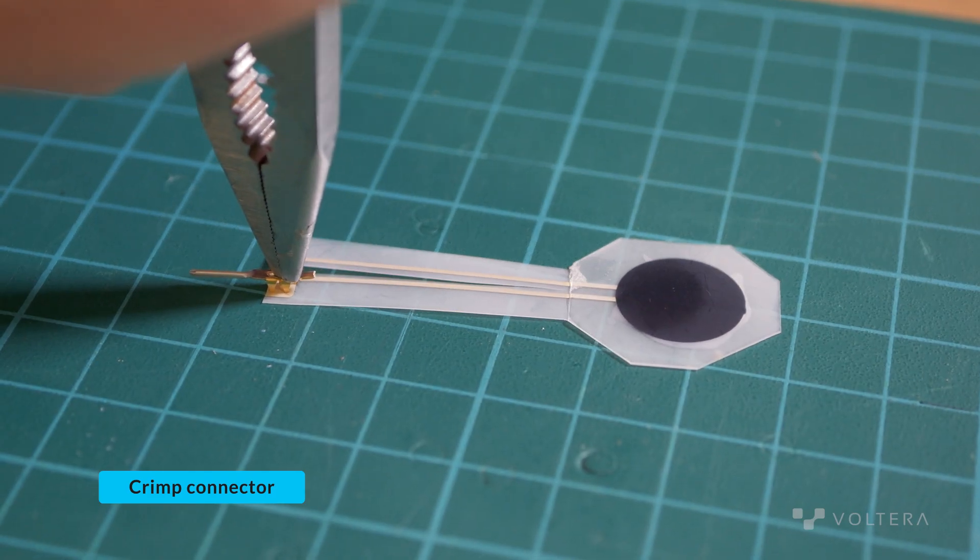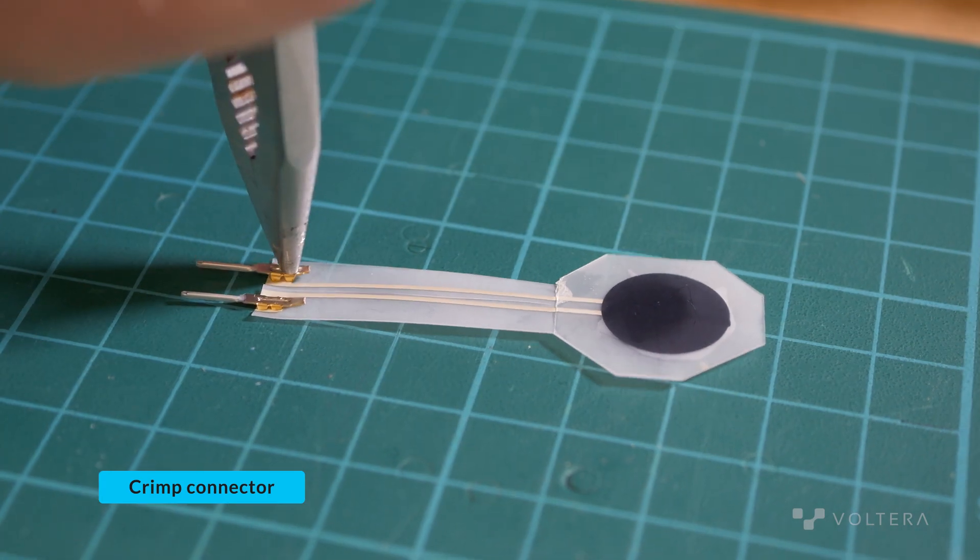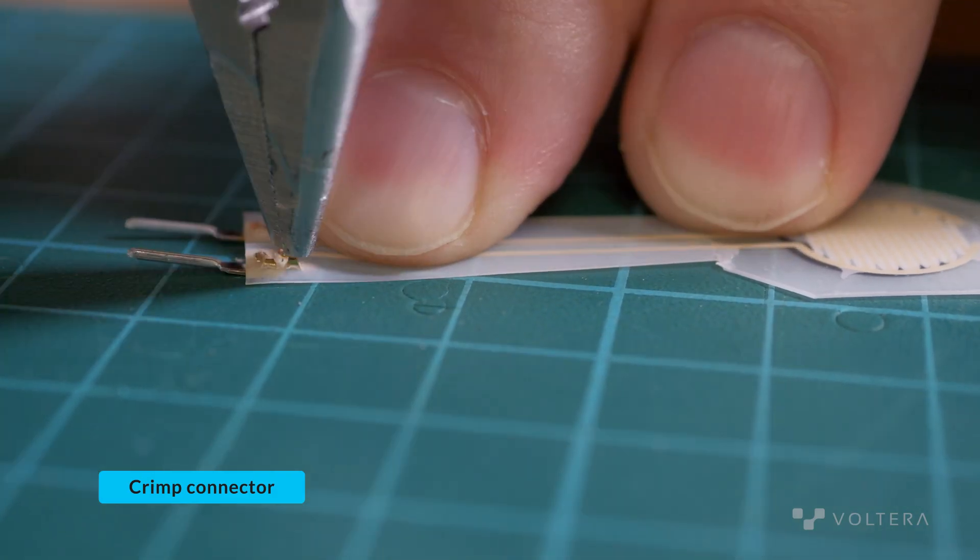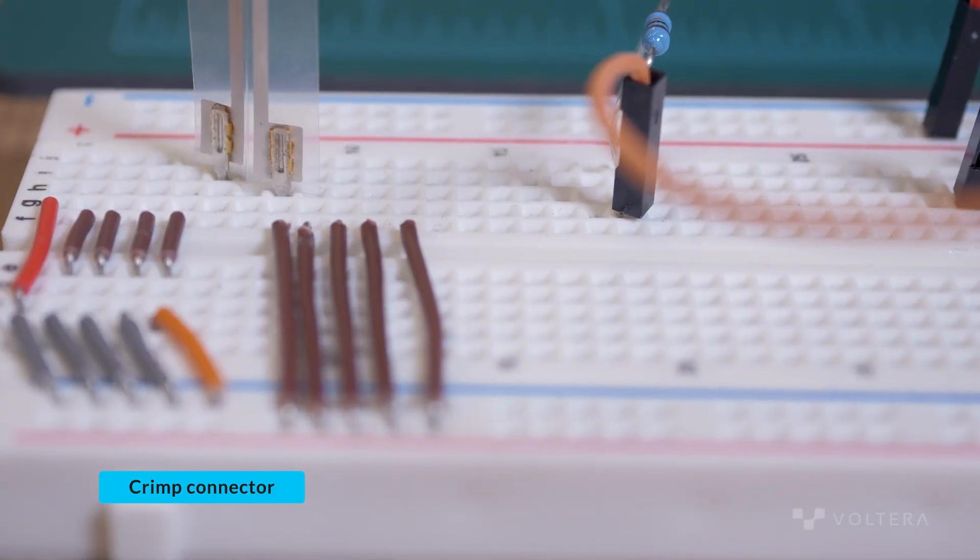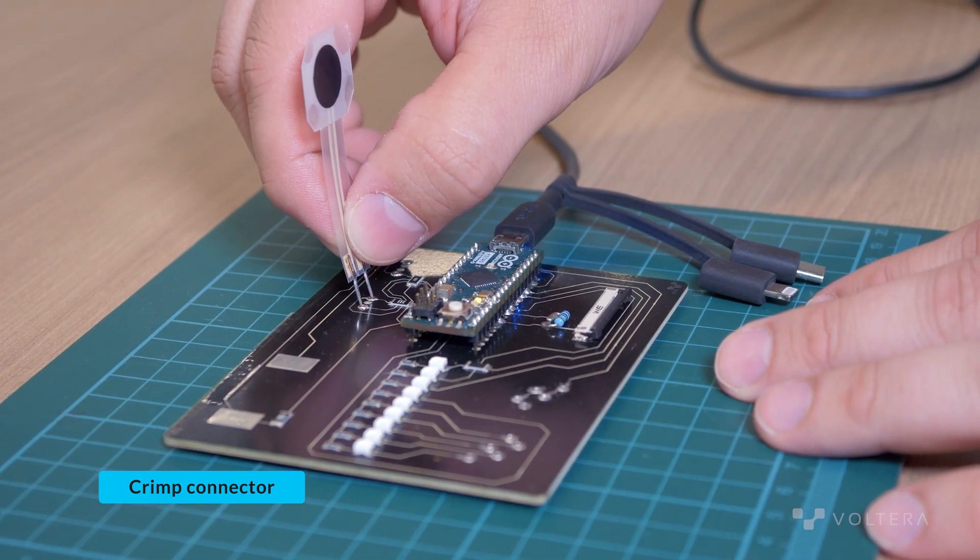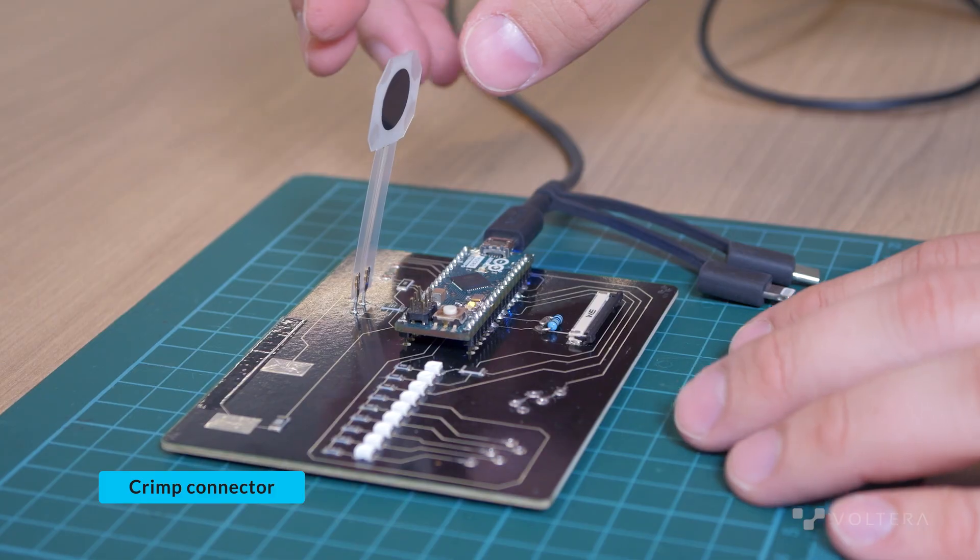The benefits of using a crimp connector include that they're easy to use, they interface well with other standard prototyping hardware like breadboards, they're durable and are reusable in that it creates a permanent connection but can be plugged in and out nearly as many times as you want.